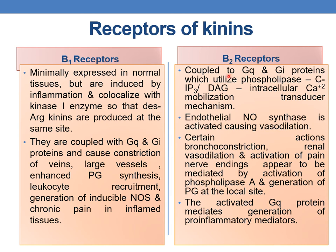B2 receptors are coupled to GQ and GI proteins, which utilize phospholipase C or IP3/DAG intracellular calcium mobilization transducer mechanism. Endothelial nitric oxide synthase is activated, causing vasodilation. Certain actions such as bronchoconstriction, renal vasodilation, and activation of pain nerve endings appear to be mediated by activation of phospholipase A and generation of prostaglandins at the local site. The activated GQ protein mediates the generation of pro-inflammatory mediators.